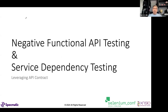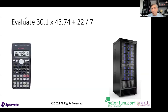Jumping in — the first thing I want to tackle is negative functional API testing and service dependency testing. Here I want to introduce the concept of API contracts and how you can leverage them to tick off both of those boxes. People often ask: what is a contract? There's a lot of confusion, so let me set the stage.